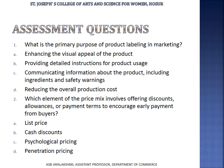Assessment questions. First: What is the primary purpose of product labeling in marketing? Options are: enhancing visual appeal of the product; providing detailed instructions for product usage; communicating information about the product including ingredients and safety warnings; or reducing the overall production cost. Second question: Which element of the price mix involves offering discounts, allowances, or payment terms to encourage early payment from buyers?